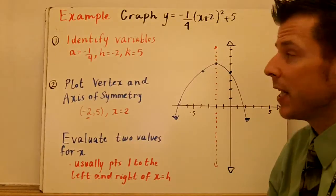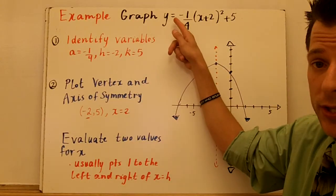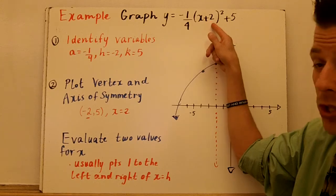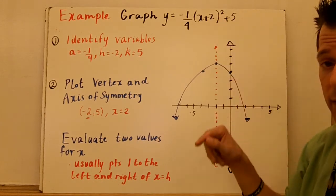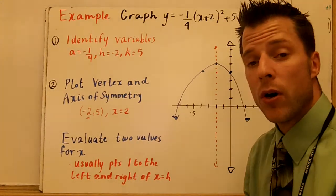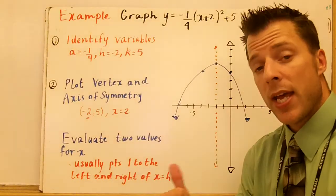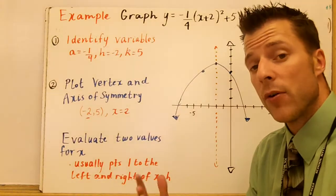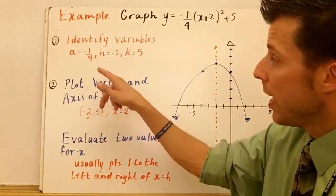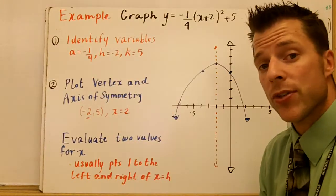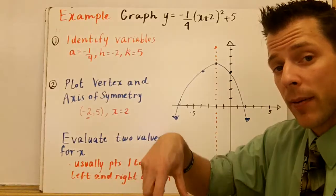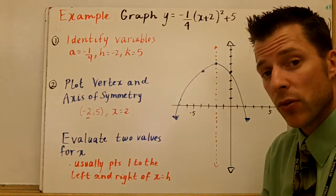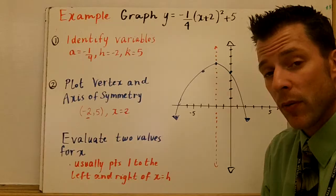In this first example, we're going to graph y equals negative one-fourth times the quantity x plus 2 squared plus 5. Step number one, you always want to identify your variables a, h, and k. You've got to determine what they do. How are they affecting the parabola? A is negative and it's one-fourth. So a negative a value means your parabola opens down. One-fourth is between zero and one, so the parabola is going to be wide.